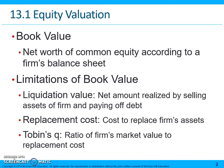Another important item is replacement cost of a firm's assets. We use Tobin's Q to analyze replacement cost. Tobin's Q is the ratio of a firm's market value to its replacement cost, and it is supposed to trend toward one over time. If it is greater than one, that means firms can enter and compete and make money, because they can enter the business at a lower cost and gain value by doing so.